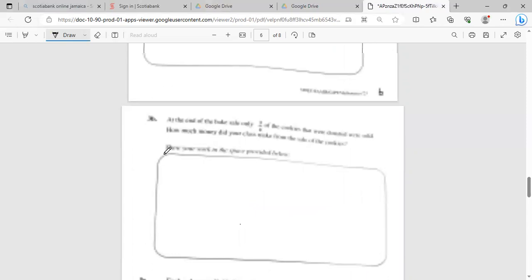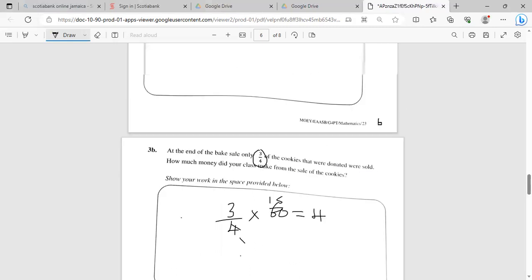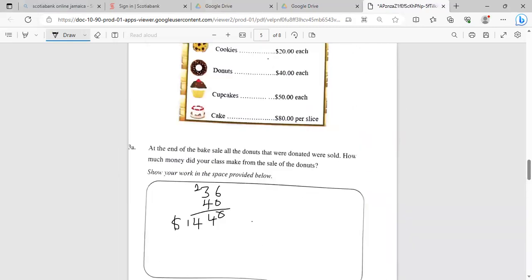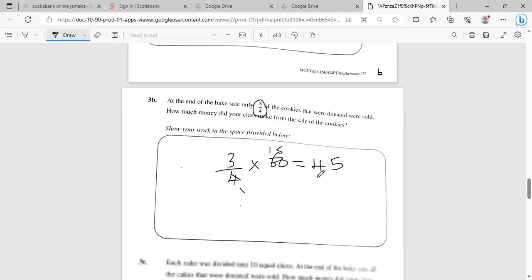At the end of the cake sale, only three-quarters of the cookies donated were sold. So three-quarters of 60, which was 60, four into this is 15, so it's a total of 45 cookies were sold. Let's look at the cost per cookie: $20 each. So 45 times 20. Two times five is 10, two times four is eight, and one more is nine. So it's $900 for the cookies.